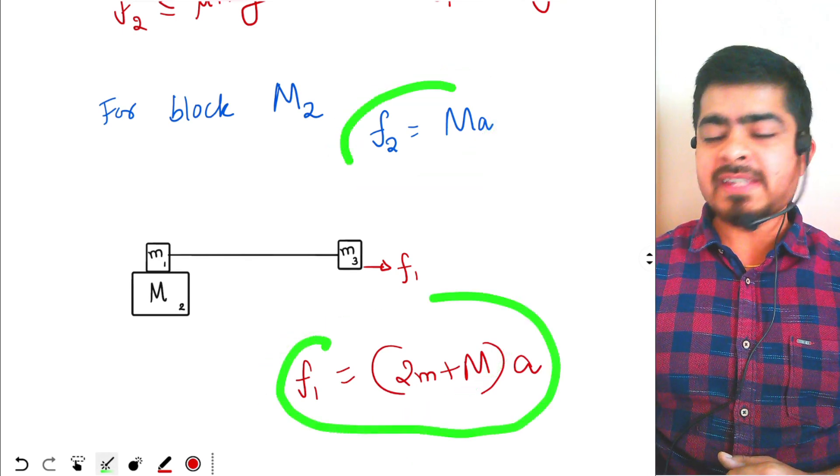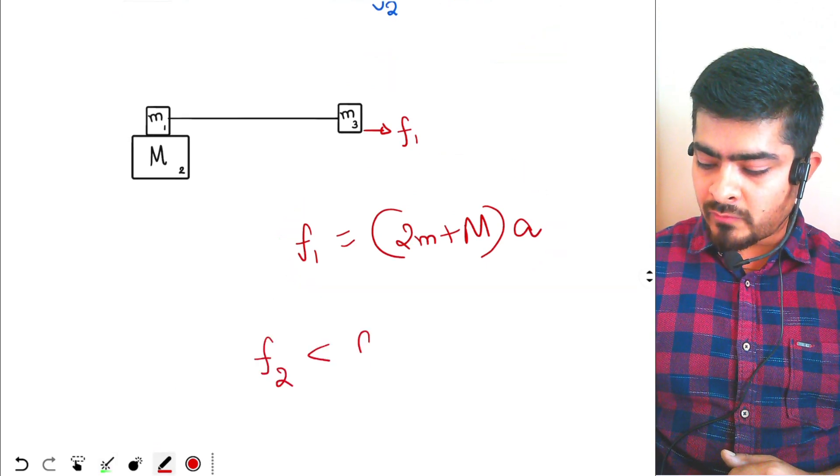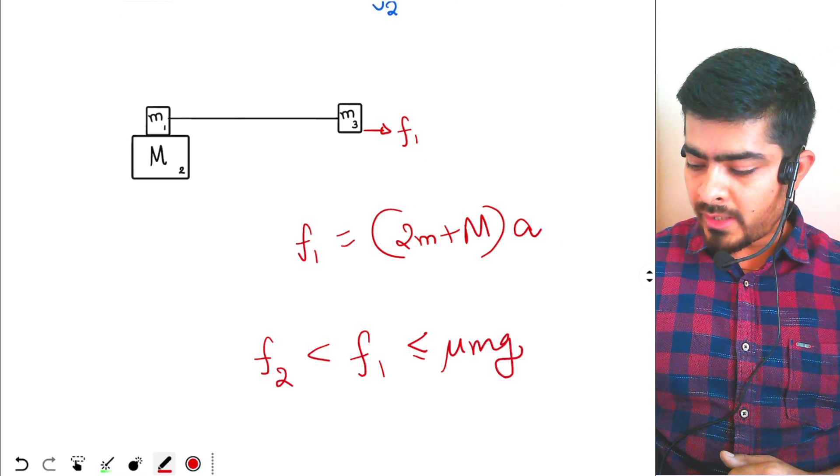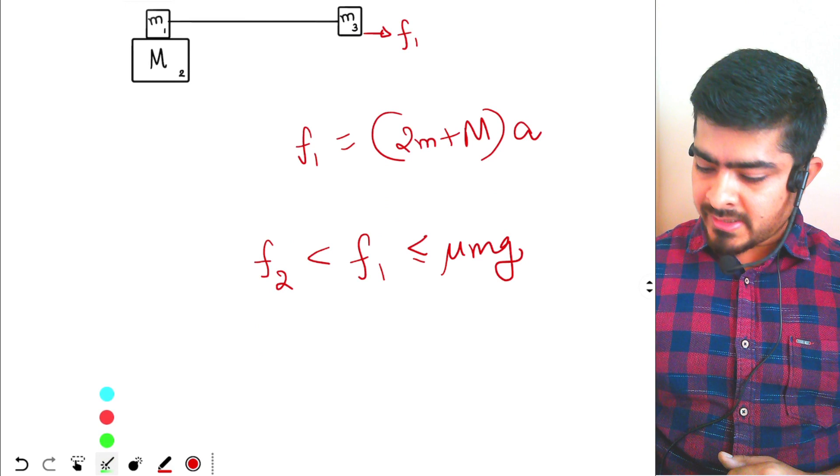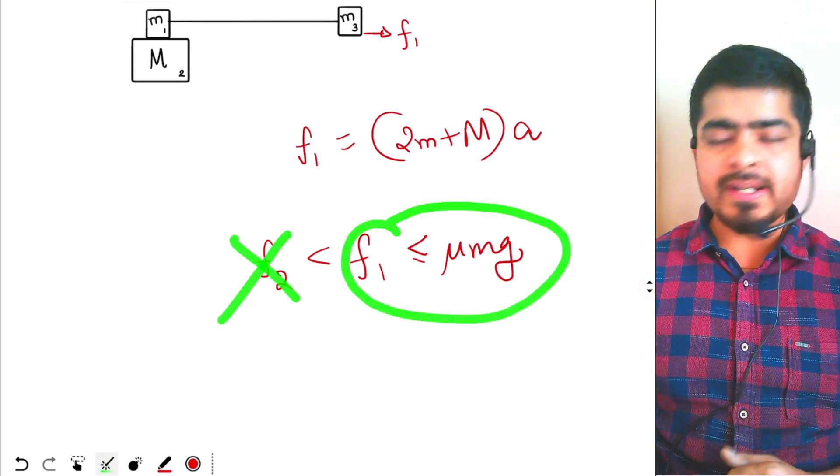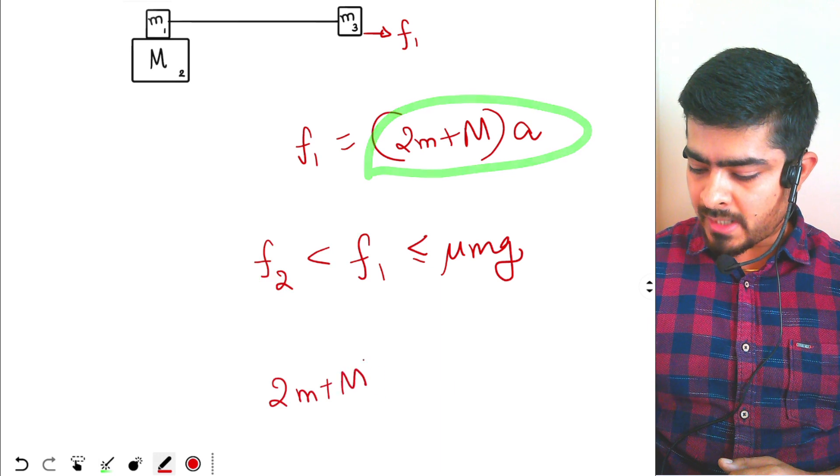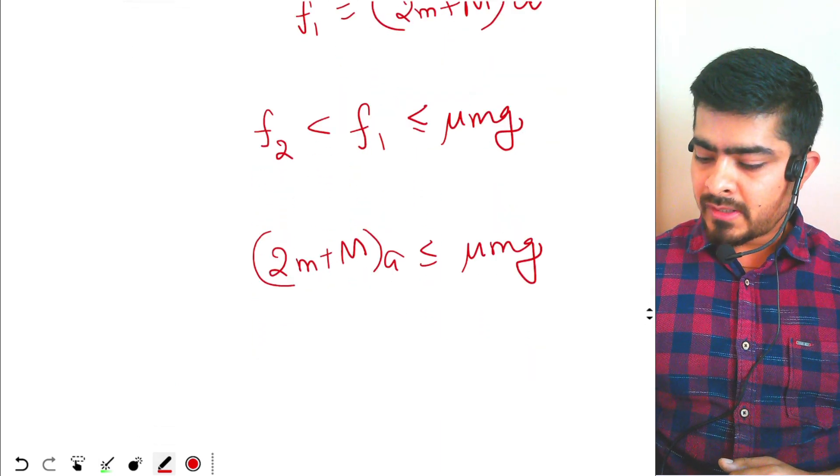F1 will always be more than F2, so I can write like this: F2 is always less than F1 and F1 is less than equal to mu Mg. I can just use this part. I don't need F2 anymore. So F1 is 2M plus M into A, 2M plus capital M into A less than equal to mu Mg. Now A is what?